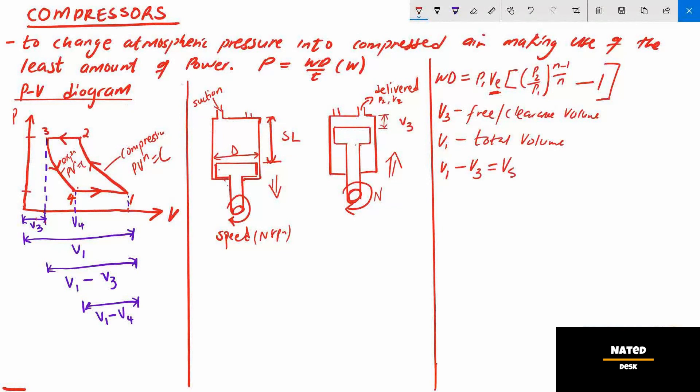Also, Vs is equal to pi times diameter squared divided by 4, all multiplied by stroke length LS, where d is the diameter of the piston or cylinder and LS is the stroke length. Stroke length LS is the distance in which the piston moved to compress the air. It can be downward or upward stroke.